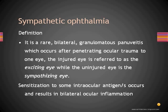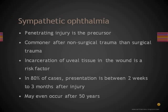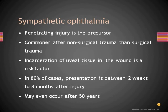The injured eye is referred to as the exciting eye, while the uninjured eye is the sympathizing eye. The exact cause is not known, but it is theorized that sensitization occurs to intraocular antigens, and the body mounts an immune response against those antigens in both eyes, resulting in bilateral ocular inflammation. The penetrating injury is the precursor — it could occur surgically or non-surgically. Non-surgical trauma is a more important risk factor than surgical trauma. Incarceration of uveal tissue in the wound predisposes to sympathetic ophthalmia more than a wound closed without tissue incarceration.